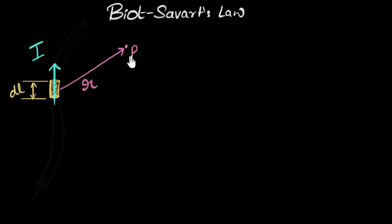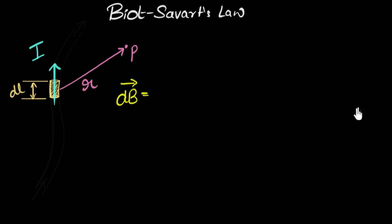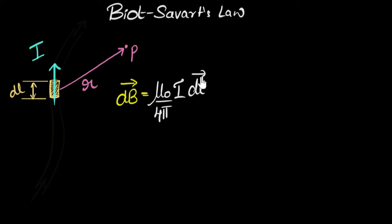The Biot-Savart law says that the strength of the magnetic field at this point — we'll call that dB, where B stands for magnetic field and 'd' because it's a tiny field created by a tiny piece of wire — is, as a vector equation: dB = (μ₀/4π) × I × (dL × r̂) / r².